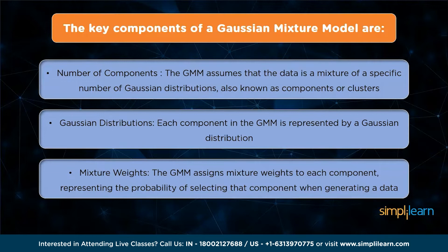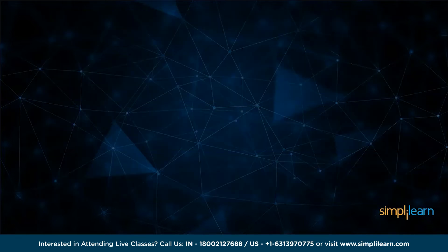Once the GMM is trained, it can be used for various tasks. For example, it can be applied to clustering by assigning data points to the most likely component or cluster. It can also be used for density estimation, where it estimates the underlying probability distribution of the data.